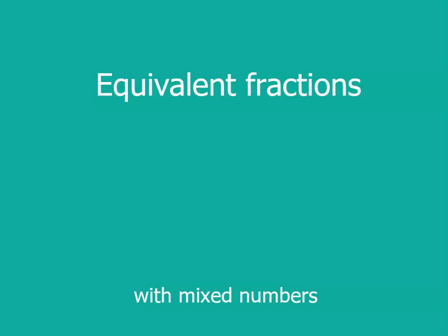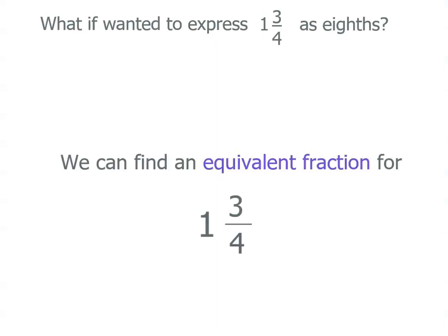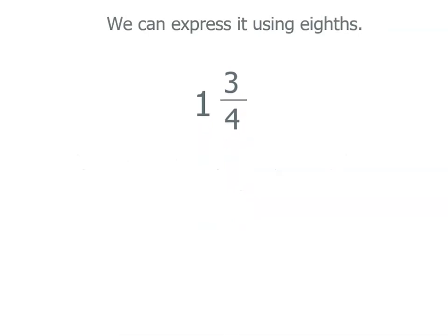We can also find equivalent fractions with mixed numbers. Let's say we've got one and three quarters and we want to express it as eighths. We've got a four as our denominator. So what we want to do is find an equivalent fraction for one and three quarters with eight as the denominator. So we can express it using eighths.